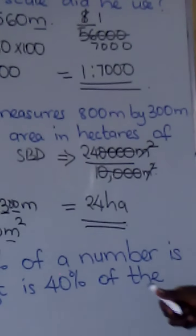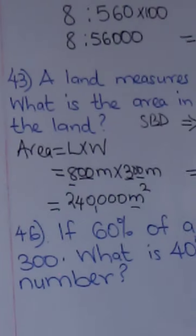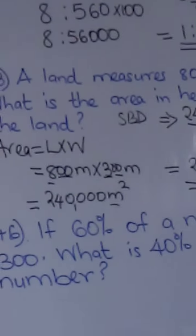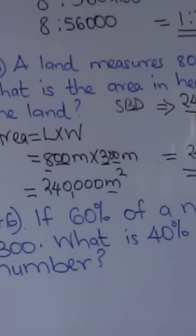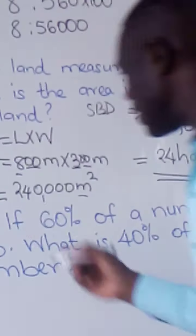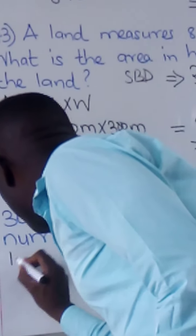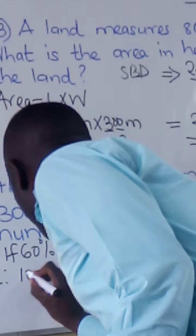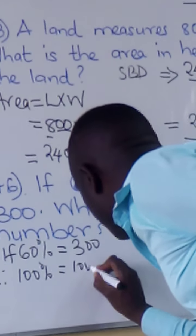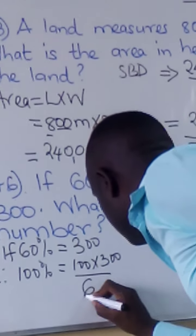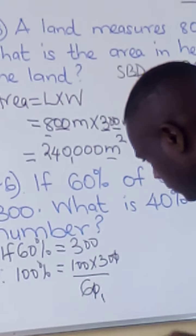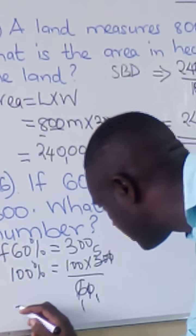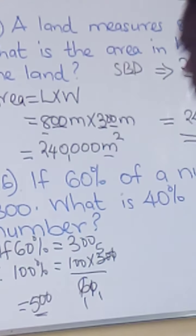If 60 percent of a number is 300, what is 40 percent? First, find 100 percent. If 60 percent equals 300, then 100 percent equals 100 times 300 over 60. We cancel: 300 divided by 60 is 5, times 100 equals 500. So 100 percent is 500.